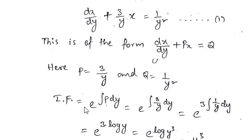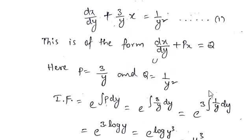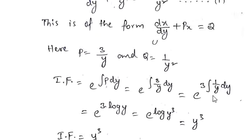The integration factor is given by e^(∫P dy) = e^(∫(3/y) dy). Since 3 is a constant, this is e^(3·∫(1/y) dy) = e^(3 ln y) = e^(ln y³).